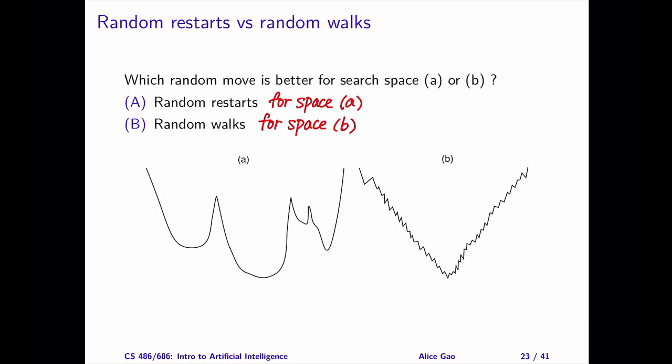Here's some intuition behind the two random moves. A random restart is a global random move, since it allows us to make a big jump in the search space. On the other hand, a random walk is a local random move, since it allows us to make small random moves in the local neighborhood.